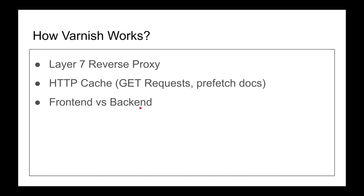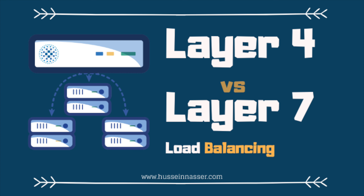How does Varnish work? It works as a layer 7 reverse proxy — an application-level proxy. At the application level, it has to look at the data to understand what's going on. Since we're caching, we're looking at HTTP content, which cannot be encrypted — you can't cache encrypted data. So Varnish is designed to work only on unencrypted HTTP. That's why it's layer 7 and not layer 4, where you can't do much caching. I'll reference a video on layer 7 vs layer 4 load balancers if you're interested.